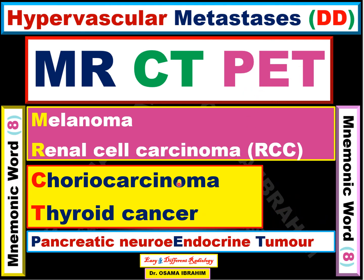BET represents pancreatic neuroendocrine tumors. These are the causes — the primary cancers, the primary neoplasms which can cause hypervascular metastasis.